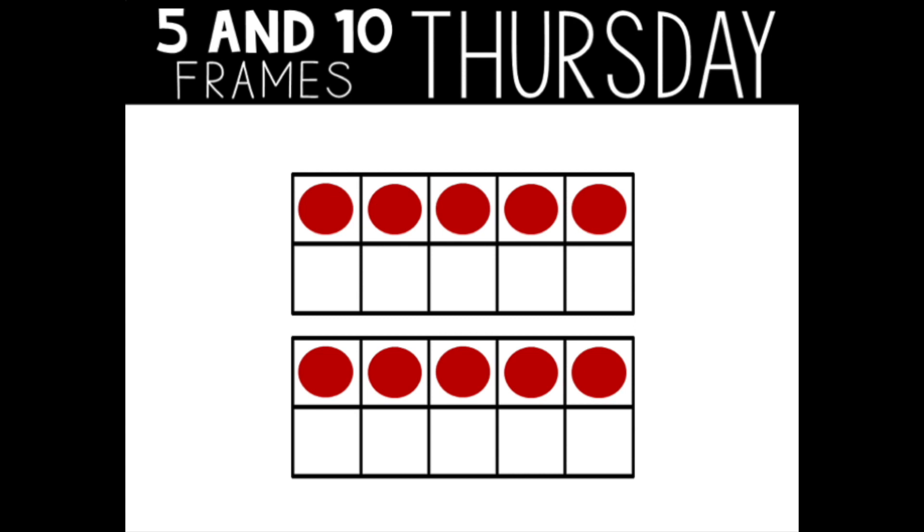Here's what I did. I noticed there were five dots in the top 10 frame and five dots in the bottom 10 frame. I took the five in the bottom 10 frame and in my mind slid them up to the top 10 frame. That gave me 10 dots total. Did you figure out the number a different way?